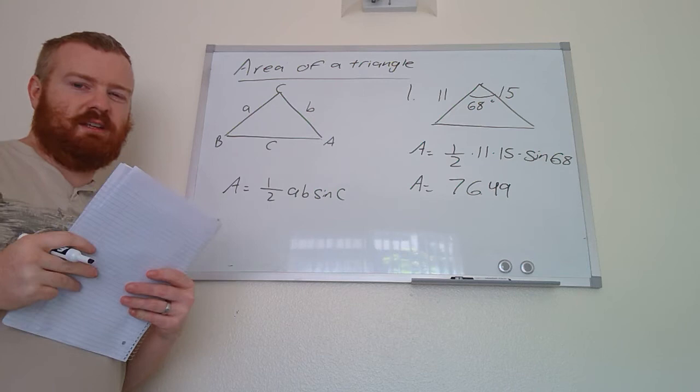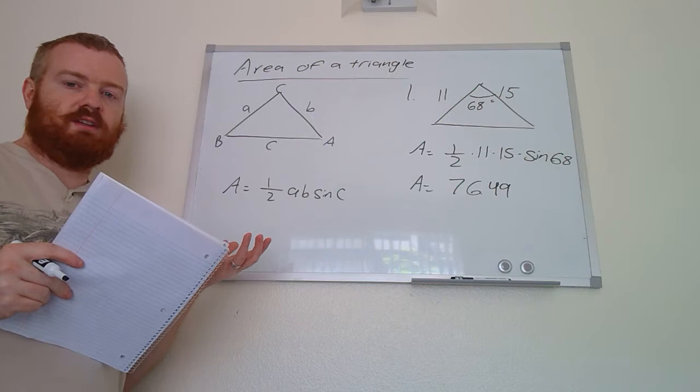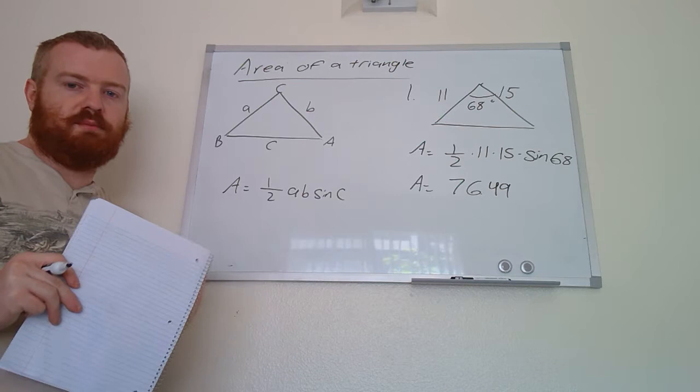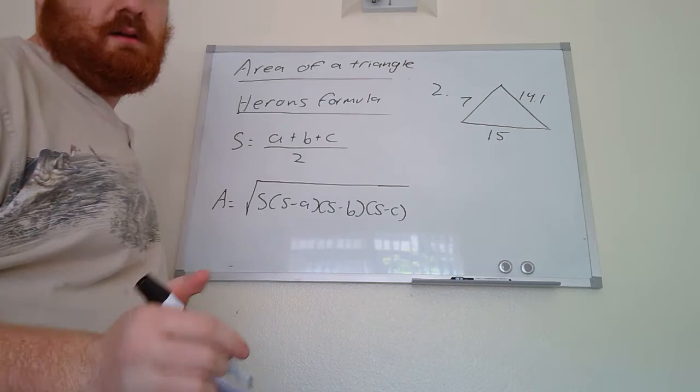On your homework, if you have a combination of angles and side lengths where you don't have the two sides with the angle between them, you would generally use the law of sines to solve for either the missing side or missing angle so you can use the area formula. But every problem on your homework should be solvable directly with this formula.